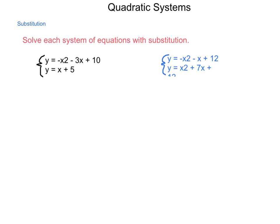Solve each system of equations with substitution. First, we have y equals negative x squared minus 3x plus 10, and y equals x plus 5 as our system. Now, since both of these are equal to y, we can substitute across to make the two right-hand sides equal to each other. So we would have x plus 5 equals the opposite of x squared minus 3x plus 10.